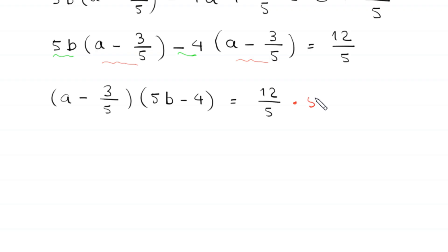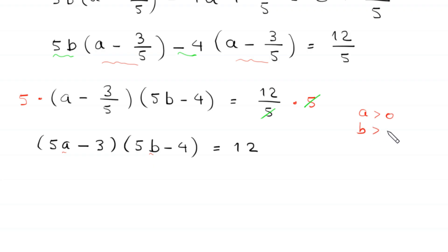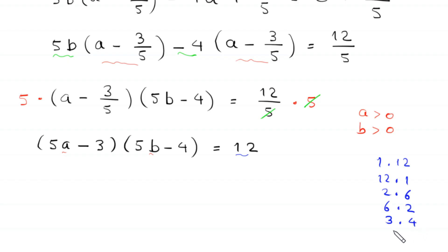We multiply both sides by 5. On the left-hand side, 5 times a gives 5a, and 5 times 3 over 5 gives 3, so we get (5a minus 3) times (5b minus 4) is equal to 12. Now we have a product of two factors on the left-hand side. Since a and b are positive integers, 12 can be factorized as: 1 times 12, 12 times 1, 2 times 6, 6 times 2, 3 times 4, and 4 times 3.